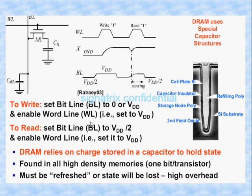For a write operation: first, set the bit line — it will be either zero or VDD. We then enable the word line. For example, suppose the bit line is set to VDD and the word line is also enabled.